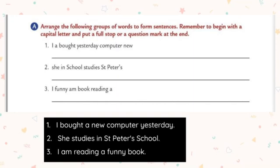The sixth one: 'A dog is in the front yard there.' We arrange it as: 'There is a dog in the front yard.' The letter T should be in capital because the first letter of any sentence should be in capital. Put a full stop at the end. If it is an interrogative sentence — a questioning sentence — put a question mark; otherwise, just put a full stop.